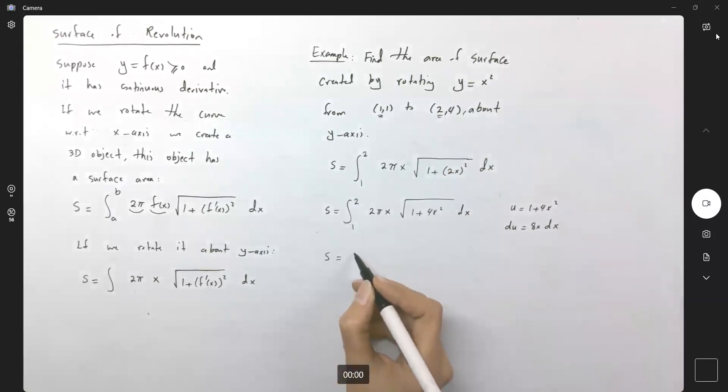So s becomes one-fourth times pi, the integral of square root of u du.